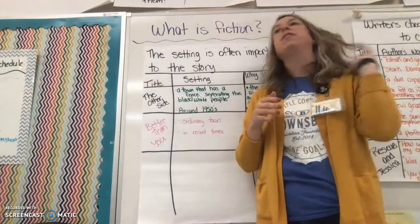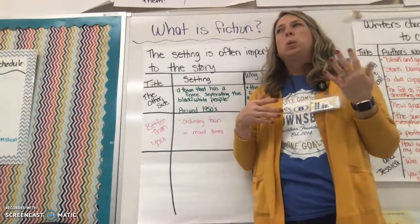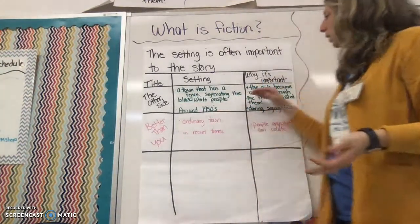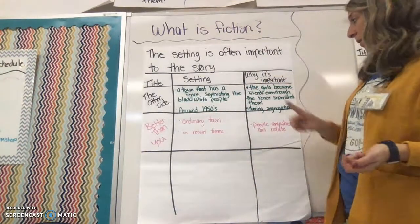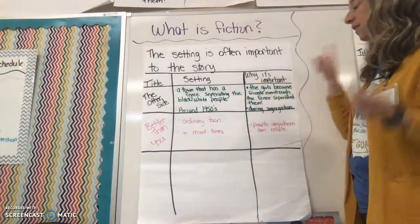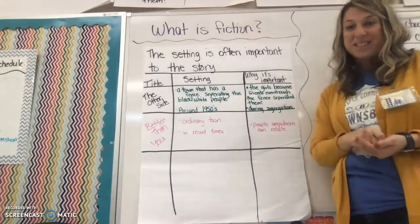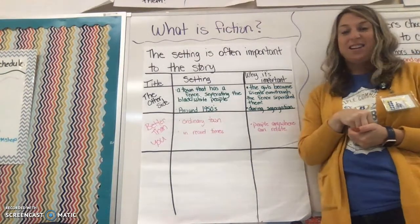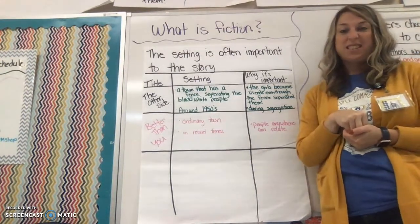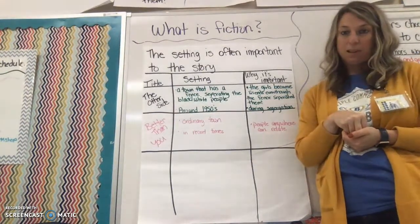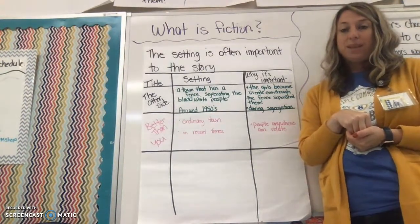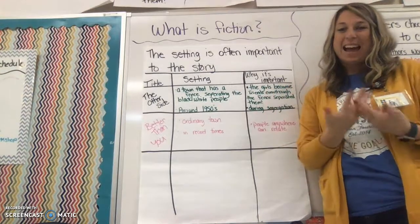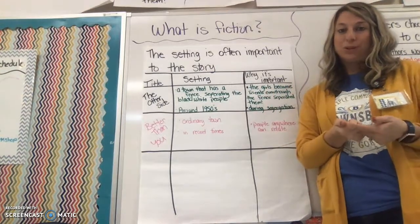So I think to myself, well why is that important to the story? Well, it's important because even though that fence was there, the girls became friends and that fence did not separate them anymore — meaning the segregation did not happen with those two girls anymore.